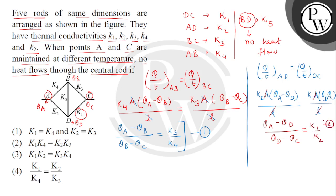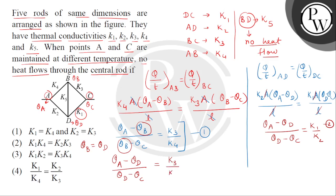अब given था कि no heat flow in the rod BD. It means theta B is same as theta D. तो यहाँ हम theta B के place पर put कर देंगे theta D. Equation 1 हो जाएगा: theta A minus theta D divided by theta D minus theta C equals to K3 divided by K4. And this is from equation number 2: K1 divided by K2. Left hand side same है, so K3 divided by K4 equals to K1 divided by K2. Cross multiplication से हमें मिलता है K1 K4 equals to K2 K3. Correct answer is option number 2.